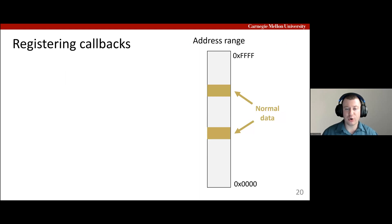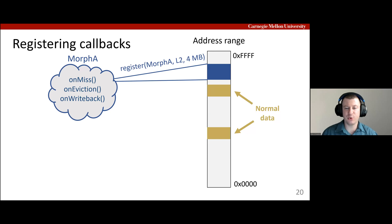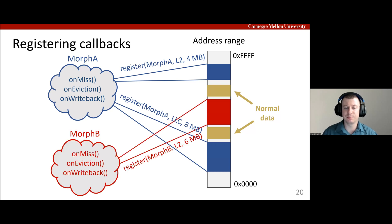An application uses TACO by creating what we call a morph — a data type which implements the three callbacks. Programmers write a morph subclass, then call the register method with the morph, the cache level to execute the callbacks (either the L2 or the LLC), and the size of the phantom address range to allocate. Multiple instances of the same morph type can be registered at the same time on distinct addresses. An application may also register different types of morphs, still on distinct addresses.